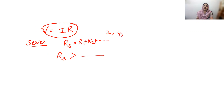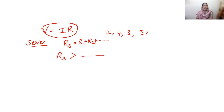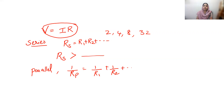For example, with 2 ohm, 4 ohm, 8 ohm, and 32 ohm in series, the effective resistance would be greater than 32 ohm. For a parallel combination, 1 by Rp is equal to 1 by R1 plus 1 by R2 plus and so on.